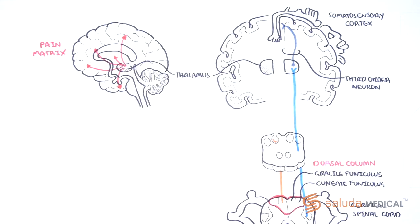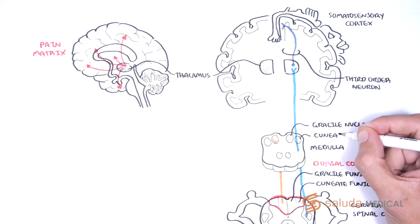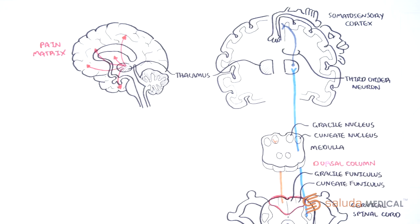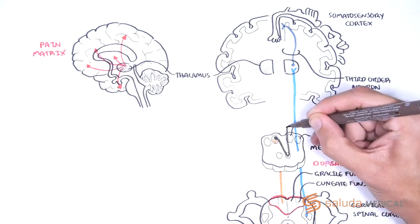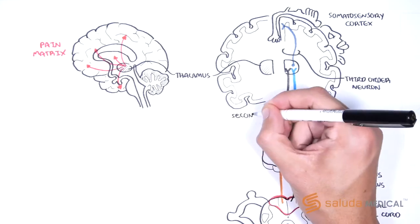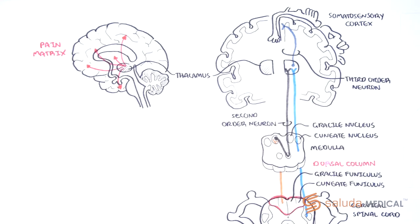Some but not all of these ascend all the way to the medulla, where they terminate in the gracilae or cuneate nuclei and synapse onto second-order neurons that cross and travel onto the thalamus, triggering a third-order neuron that finally will reach the somatosensory cortex, where we perceive the sensation.